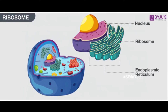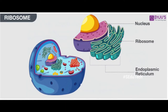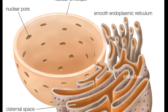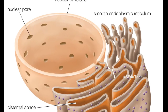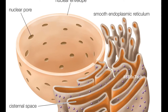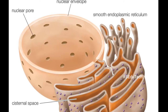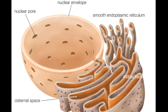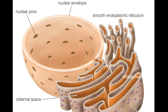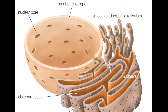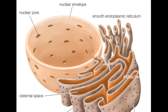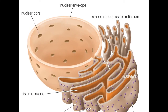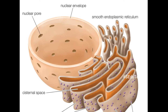Our seventh part is the endoplasmic reticulum. The endoplasmic reticulum is a membrane system of folded sacs and tunnels. It helps move proteins within the cell as well as export them outside of the cell. There are two types of endoplasmic reticulum.